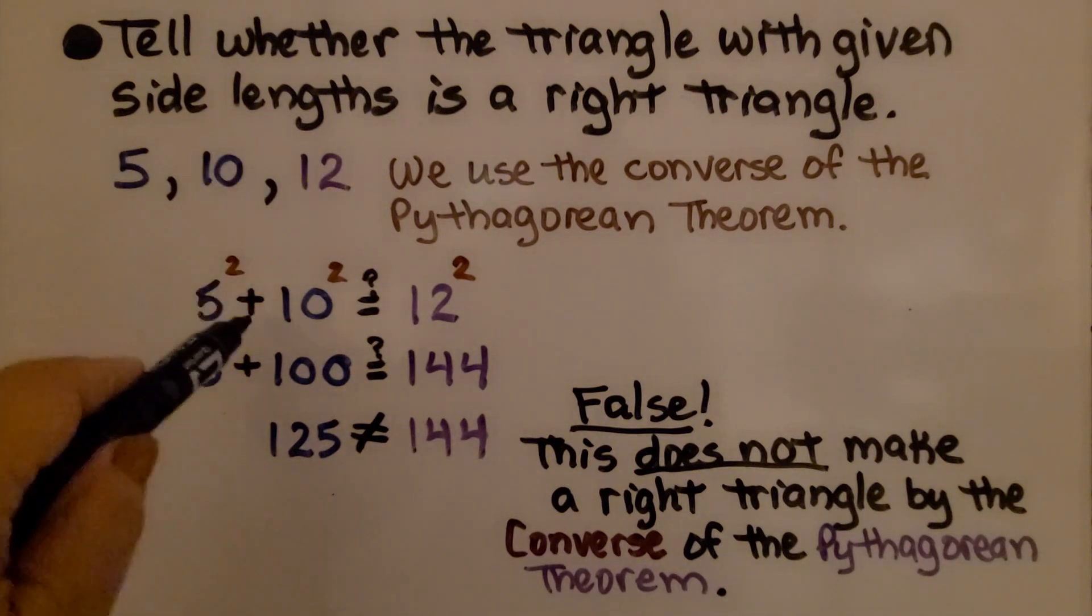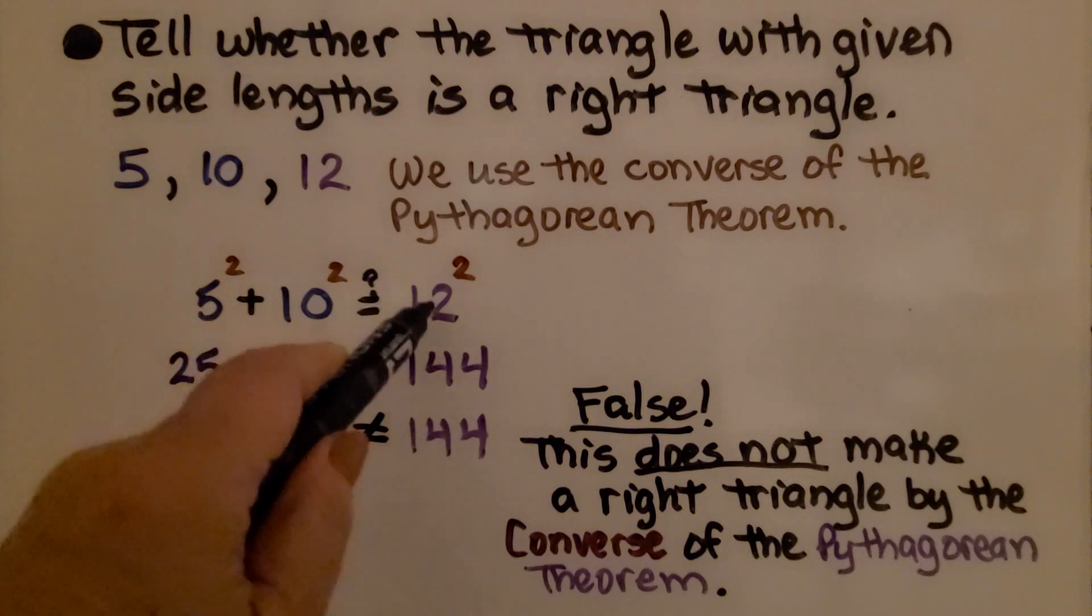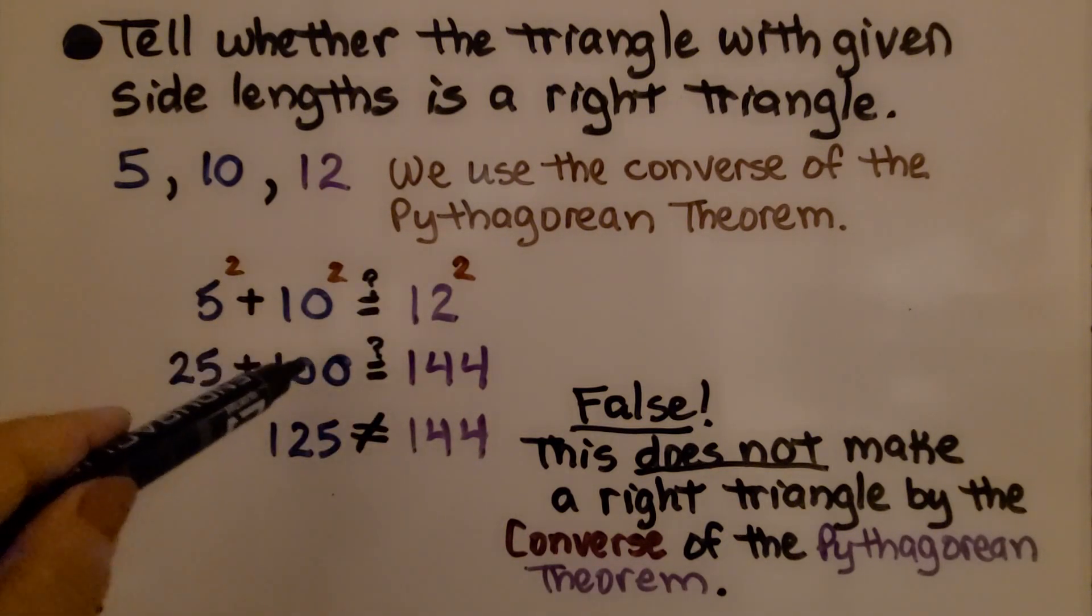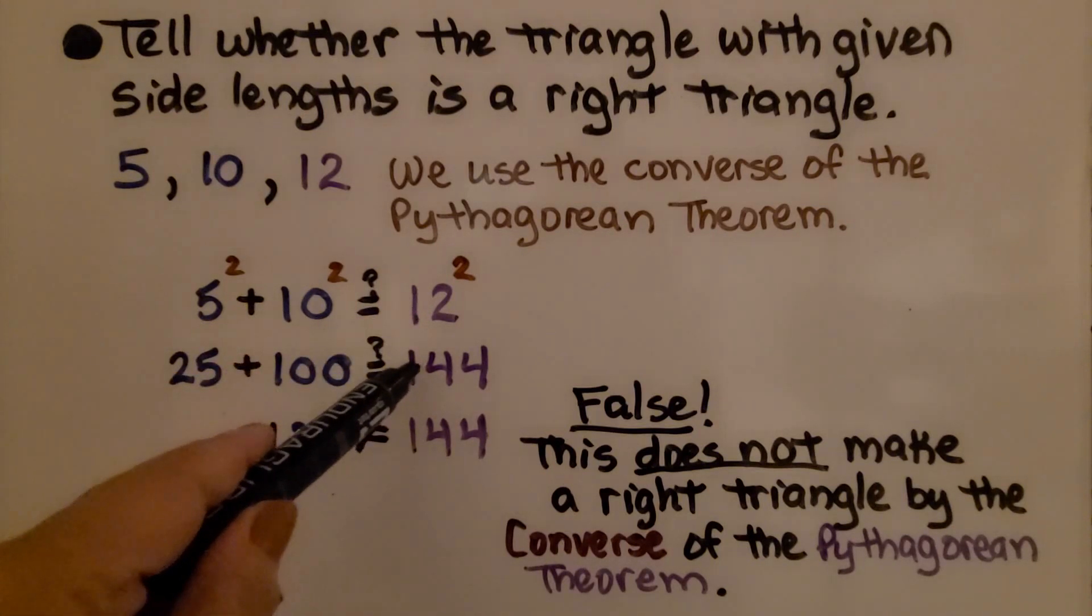We do 5 squared plus 10 squared. Is it equal to 12 squared? Well, 5 times 5 is 25, and 10 times 10 is 100. 12 times 12 is 144.